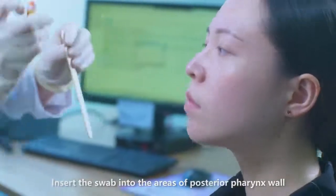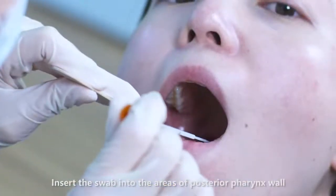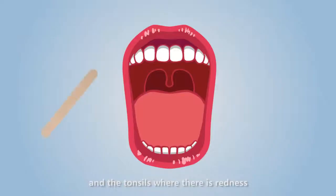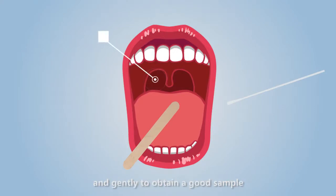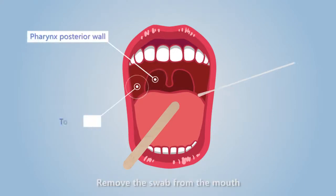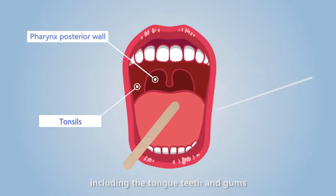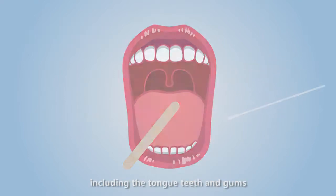Insert the swab into the areas of posterior pharynx wall and the tonsils where there is redness. Rub the swab over the areas firmly and gently to obtain a good sample. Remove the swab from the mouth without touching any surface including the tongue, teeth, and gums.